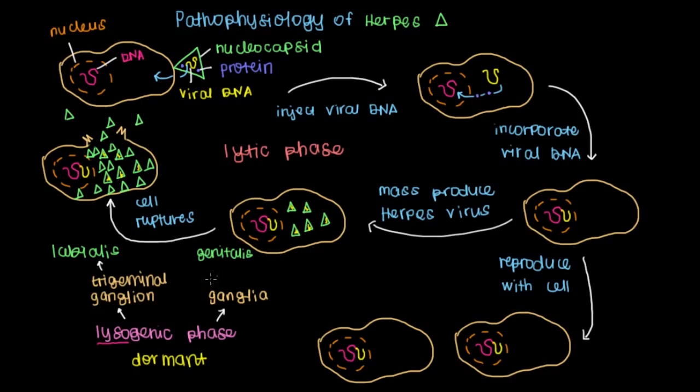So that's for herpes labialis. Now for herpes genitalis, there are several ganglia that the herpes can become dormant in. And we group them together and call them the lumbosacral ganglia, which is a reference to the spinal cord. It can be in the lumbar or the sacral region of the spinal cord.